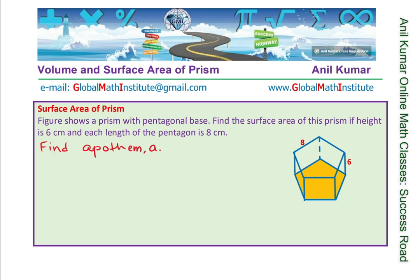Let us calculate how to find the apothem, showing the calculations on the pentagon. This is the apothem which we need to find. If I drop a perpendicular from the center, it is going to divide the sides into equal parts. The length is 8, so each half will be 4 units. If I join this with the vertex, I make a triangle — and these are the five triangles. We need to find the angle which the triangle has. This is an isosceles triangle; we need to find these angles.